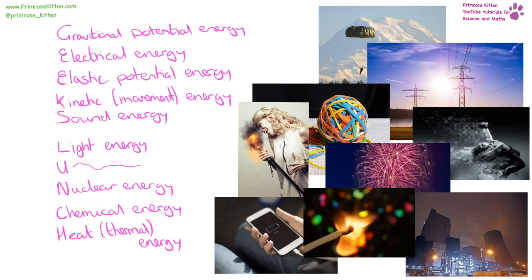With the fireworks, it was stored as chemical energy, and then it is transferred into kinetic energy as it moves up. As it explodes, we're going to have light, heat, and sound energy coming out, and then gravitational potential energy as it starts to fall, and kinetic energy as it falls back down.